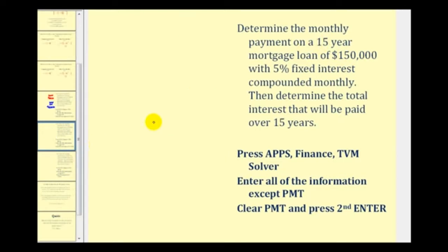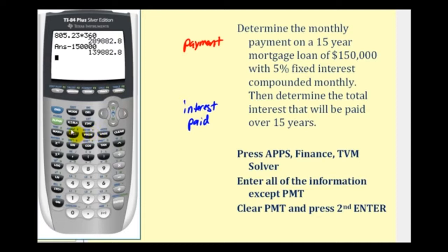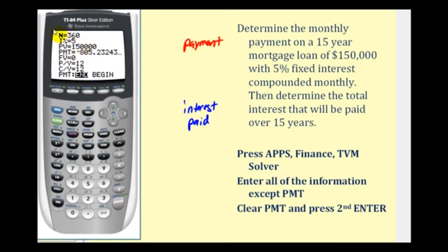Now for our second example, we're going to look at the same situation, but instead of using a 30-year mortgage, we'll take a look at the difference if we use a 15-year mortgage. So we're going to press the apps key again, enter at the finance menu, enter for PMT solver. All this information is going to be the same, but now N, the total number of payments, is going to be 12 times 15 instead of 12 times 30, because it's a 15-year mortgage. Everything else stays the same, so we'll go down to the payment cell, clear this amount, and then press alpha enter to determine the new monthly payment.